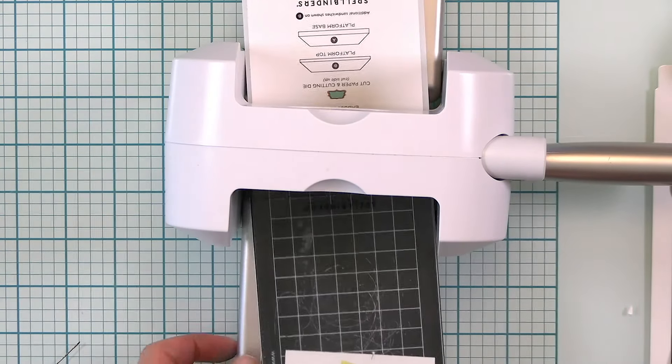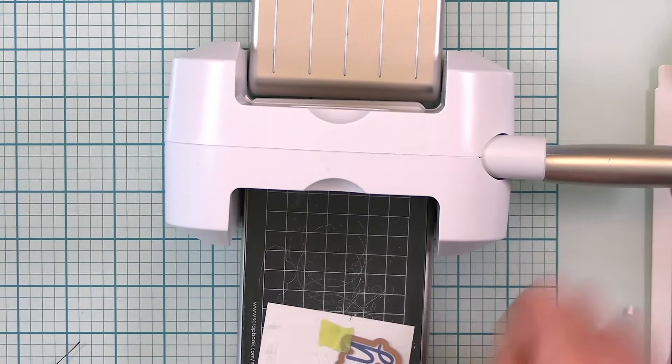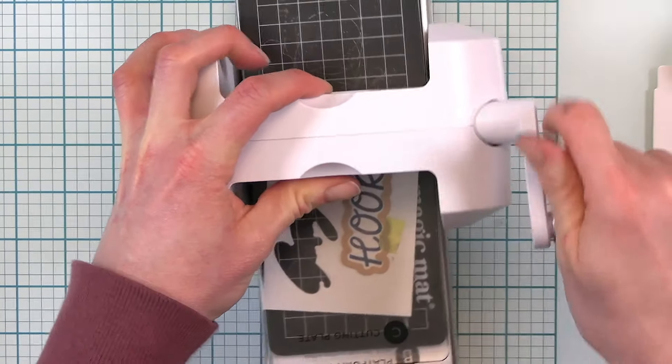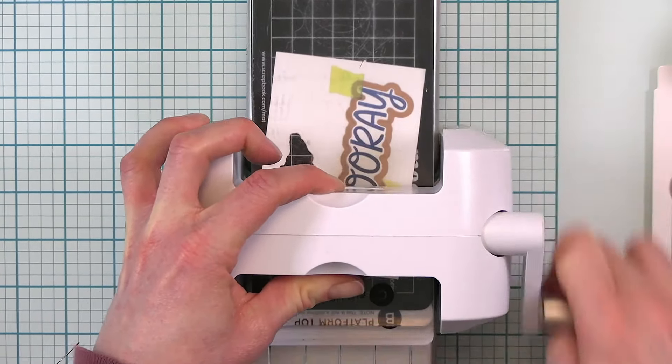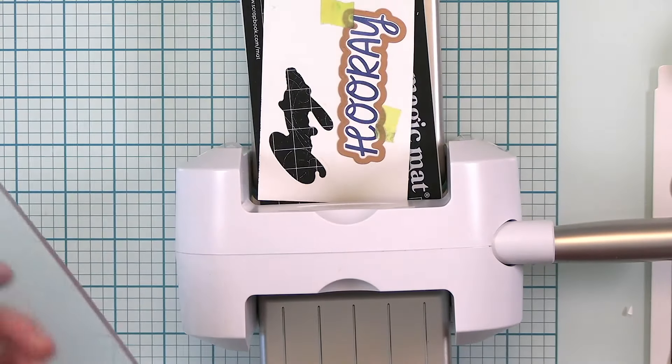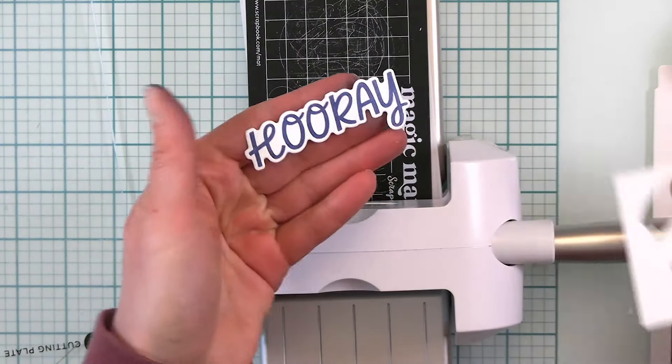I just love having the coordinating dies with these Better Press plates. This kind of single sentiment is perfect for the Scout. I love being able to put this on my desktop instead of my bigger Platinum 6 because it's just a lot easier for me to turn around and grab when I need to cut out something small.